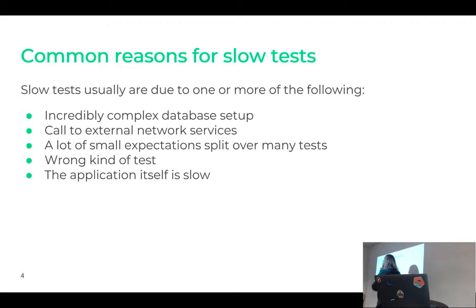Also, if you have a lot of small expectations that are split over many tests. Now, the best practices say you have one expectation for every test, but it's not always true because sometimes the setup part of your test is so expensive that if you have too many tests with one expectation per test, it means you have to run it a lot of times and this will slow you down. Another very common reason is you have the wrong kind of test. If you're using a feature test, a system test, a Capybara test to test something that could be done in a unit test, you're adding overhead without adding any value. Or also, it could be that the application itself is slow. If the application is slow, the test will inevitably be slow as well.